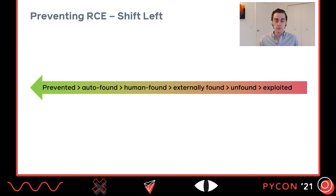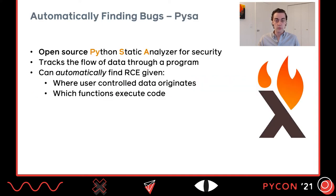At Facebook, when we talk about security, we often talk in terms of shifting left. We think of a continuum from worst case on the right — having a bug be exploited — to best case on the left — automatically detecting or entirely preventing a bug. Our goal is always to shift further left, moving from human-found to automatically found. One way we automatically find bugs is with static analysis. For Python code, this is an open source tool called PISA, which stands for Python Static Analyzer. It's focused on security and designed to track data flows throughout a program. Given information about where user-controlled data enters and what functions execute code, PISA can automatically find where RCE may exist.